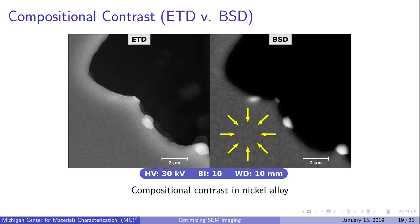Heavier elements appear brighter in the BSD compared to lighter elements. Zooming in on a nickel alloy, we can see compositional contrast with the BSD—the lighter regions are secondary gamma prime particles, which are composed of heavier elements on average than the darker matrix.